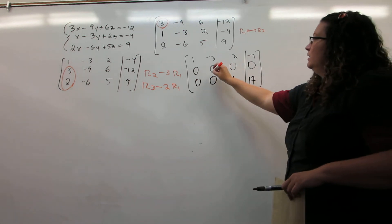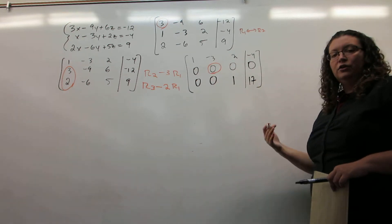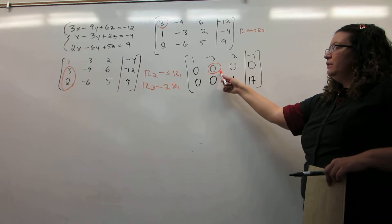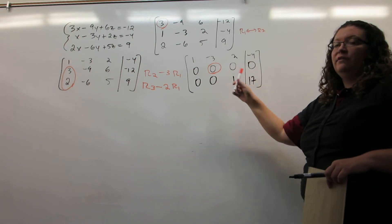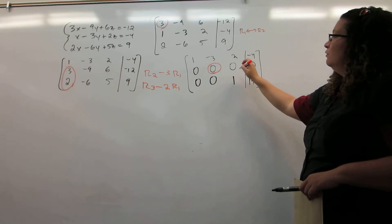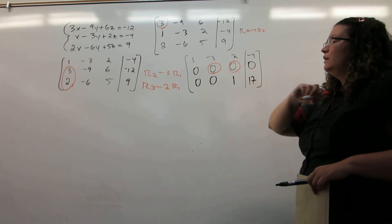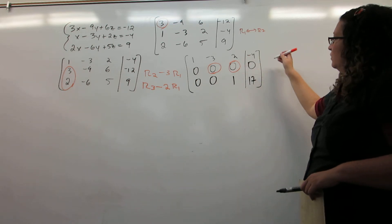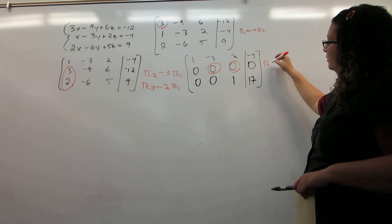Our next goal is to get a 1 here. You cannot turn a 0 into a 1, so we're never going to be able to get a 1 there, because we don't have an available option. So we move on, and we say we'd like the 1 to be here instead. I can't turn that 0 into the 1, but I can flip-flop rows 2 and row 3.